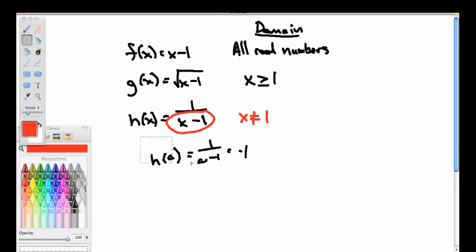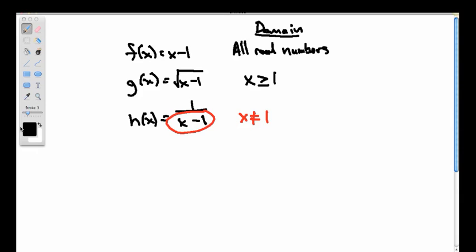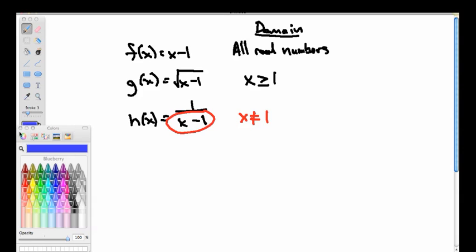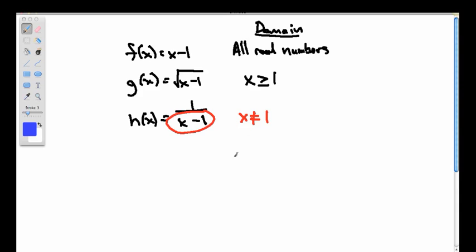In finding domains of functions, we basically look for potential problems and screen them out and write these as inequalities or just as descriptions. We're going to talk now about a way of writing these inequalities and sets of numbers for interval notation. The interval is just a special kind of set notation.